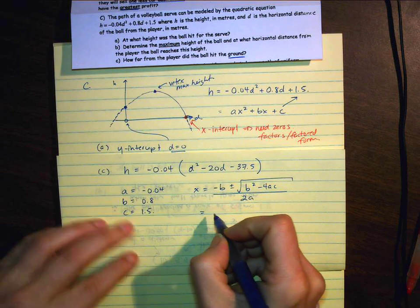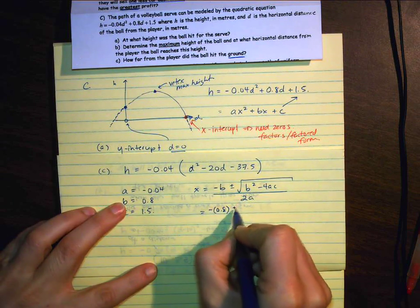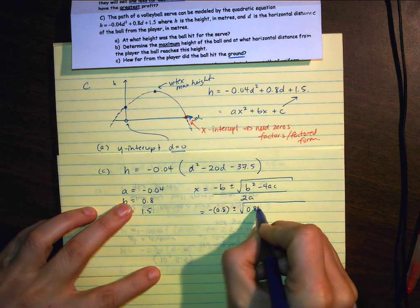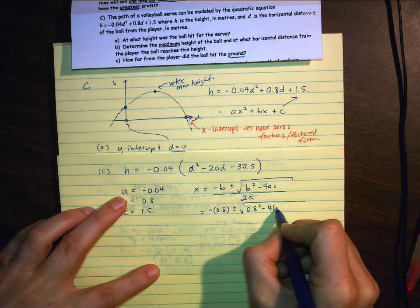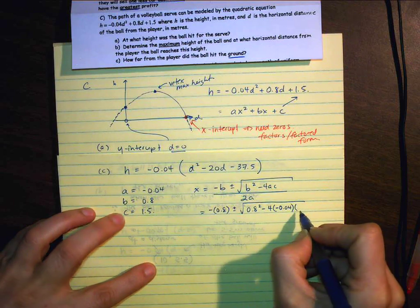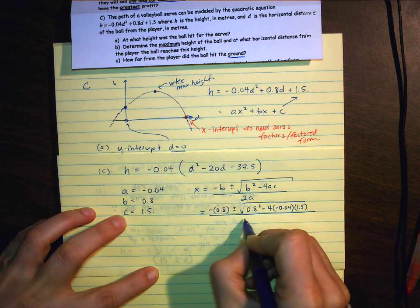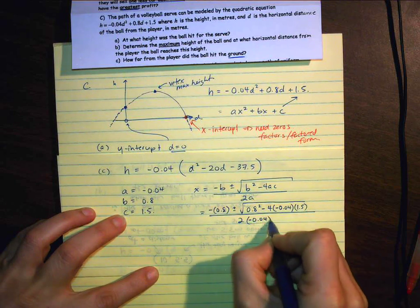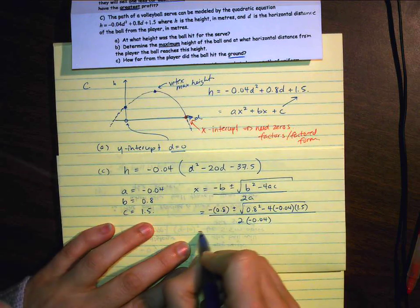x is equal to negative b plus or minus the square root of b squared minus 4ac all over 2a. So what we'll want to do is sub in all of these numbers. Plus or minus the square root, b squared is going to be 0.8 squared, minus 4. a is negative 0.04, and c is 1.5. All over 2a, just negative 0.04.